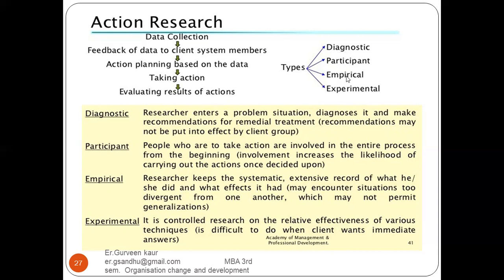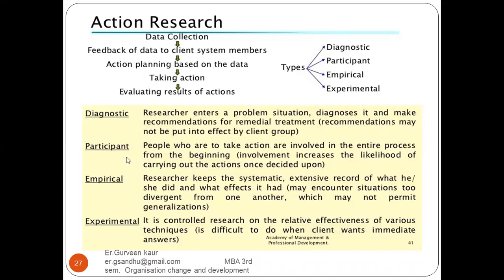Action research consists of different types: diagnostic, participant, empirical, and experimental. In the diagnostic part, we enter a problem situation, diagnose it, and make recommendations for remedial treatment. In the participant part, how the problem can be solved and how the information can be used is determined.